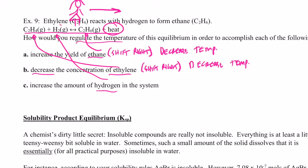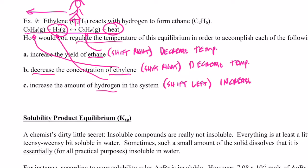For part c, we want to increase the amount of hydrogen, which is on the left side, so we want to shift left. We want to shift away from the heat, so we increase the temperature — the little girl goes away from the heat toward the left. If you said increase temperature for letter c, you did it correctly. Now I've got a short video to show you related to equilibrium shift with two demonstrations — hopefully that will clear things up.